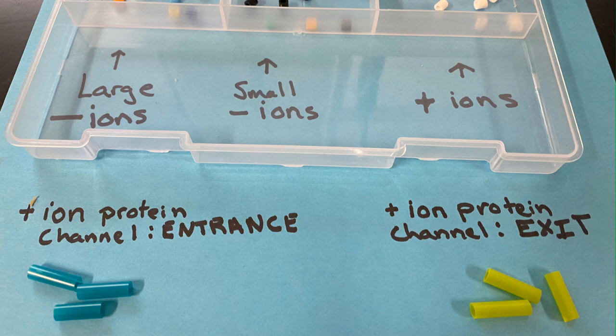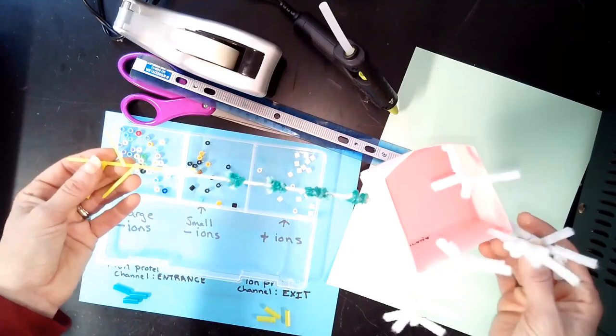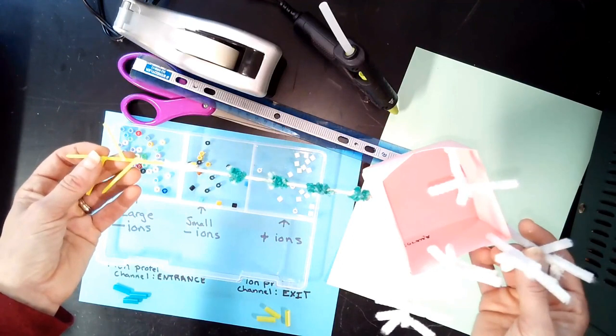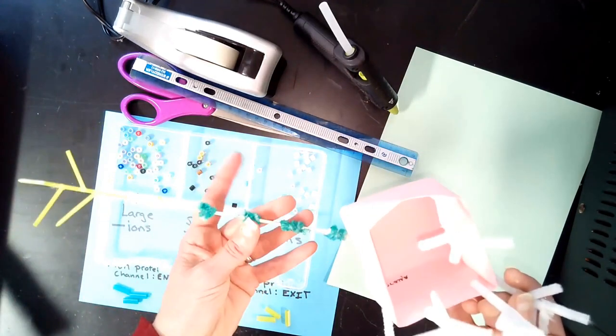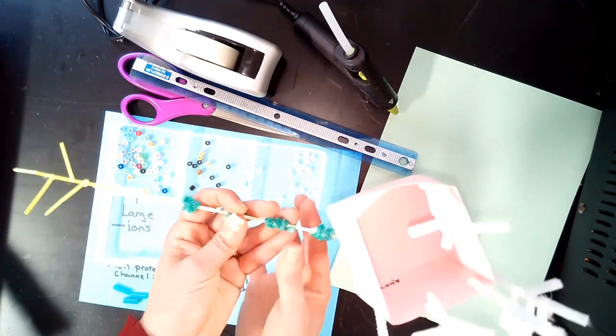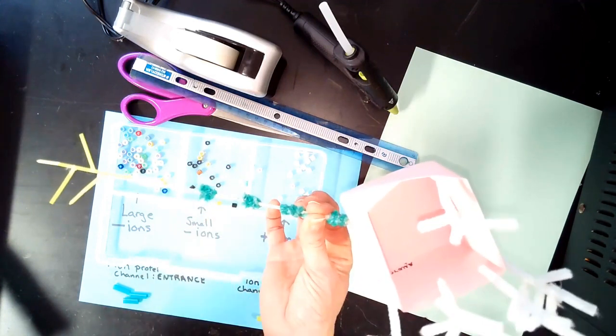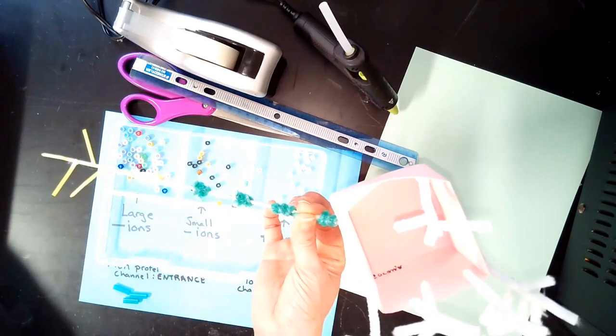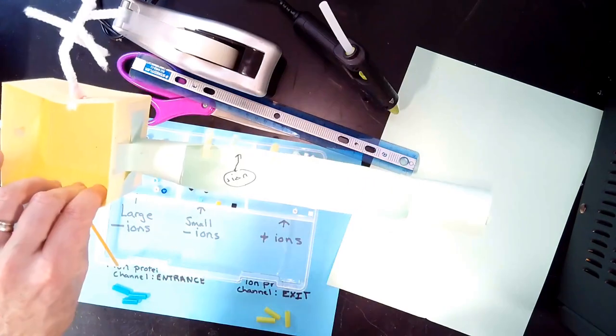So what we need to do is take your beautiful paper model of a neuron and we just need to modify one thing. And that's this axon. This is a beautiful axon, but we need to modify it to allow us to understand what's going on. Okay, let's get started.